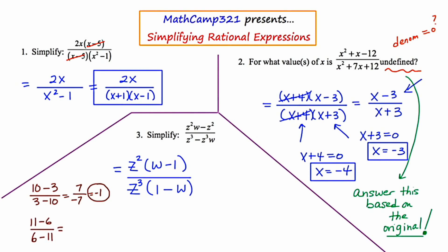Now, 11 minus 6 is 5 and 6 minus 11 is negative 5. And again, this simplifies down to negative 1.